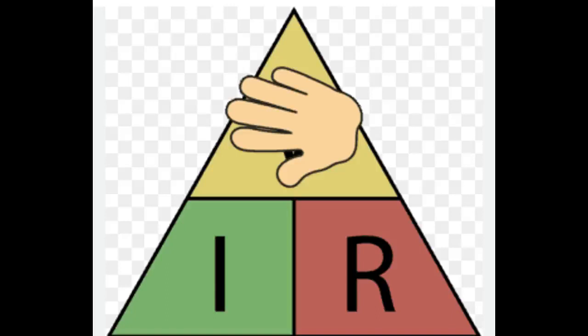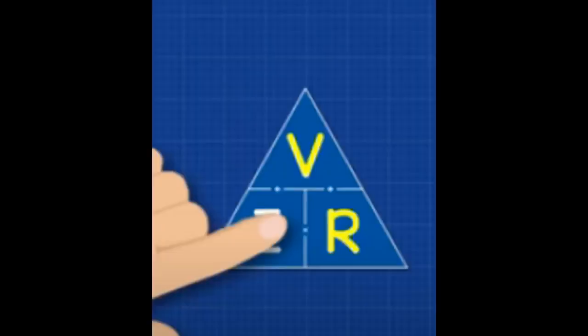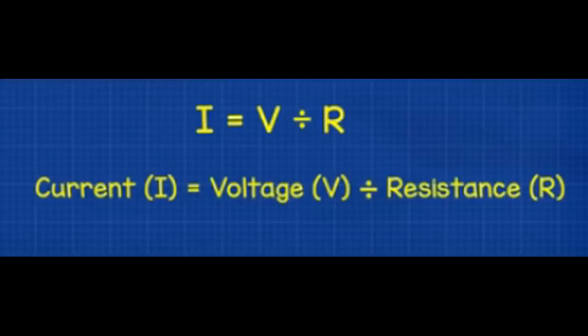Anyway, we get voltage equals current multiplied by resistance by covering V. If we want to find the current, we write I and then cover up the letter I in the triangle. That gives us V and R, and because V is above R, we write V divided by R. As a result, current equals voltage divided by resistance.